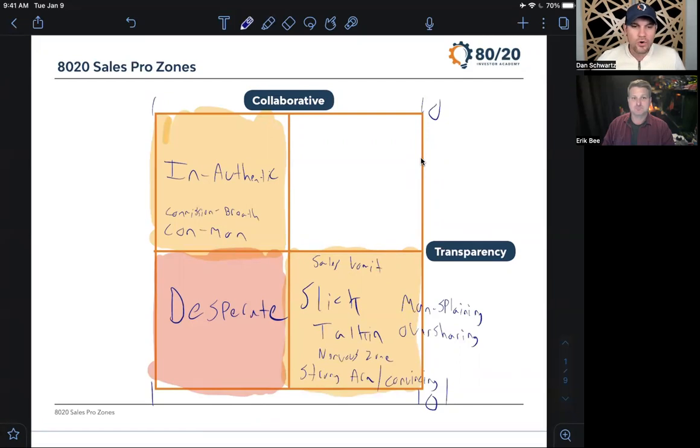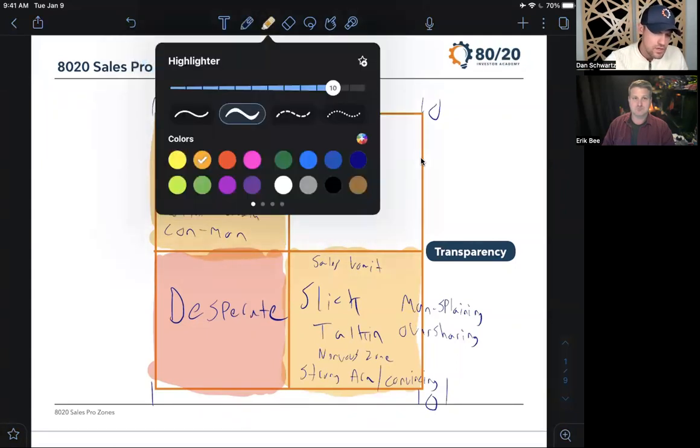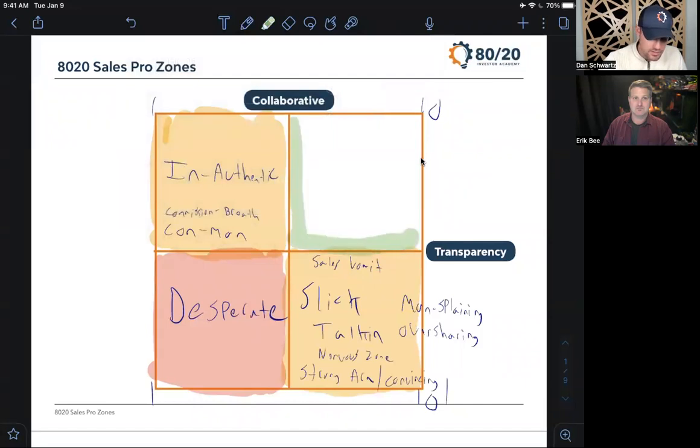Interesting. So the goal obviously is to merge both of these together where you have a high collaborative sales experience with high transparency. And from the seller's perspective, when you're dealing with someone that's just like working with you and they're showing you everything, they're giving their intentions, they're telling you how much you're going to make. This is the pro zone.